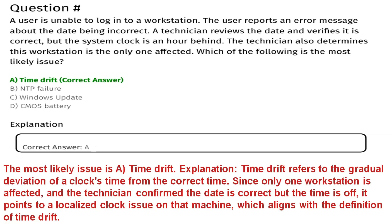Question two: a user is unable to log into a workstation and reports an error message about an incorrect date. A technician reviews the date and verifies it is correct, but the system clock is an hour behind. The technician determines this workstation is the only one affected. Which of the following is the most likely issue? Option A: time drift. Option B: NTP failure. Option C: Windows update. Option D: CMOS battery. The correct answer is option A, time drift.